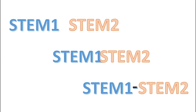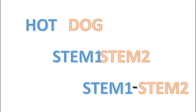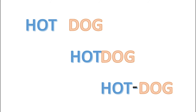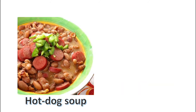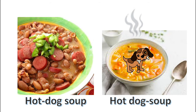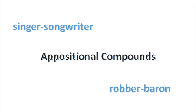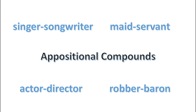High frequency words tend to be more stable, but even common words like hot dog can be written as either open or closed. When it comes to hyphenation, there are a few loose guidelines to follow. Open compounds that modify another noun are typically hyphenated to avoid confusion — there is a big difference between hot-dog soup and hot dog soup. There is also a small subclass of compounds called appositional compounds, such as singer-songwriter, robber baron, actor-director, maidservant, etc., that always appear hyphenated.